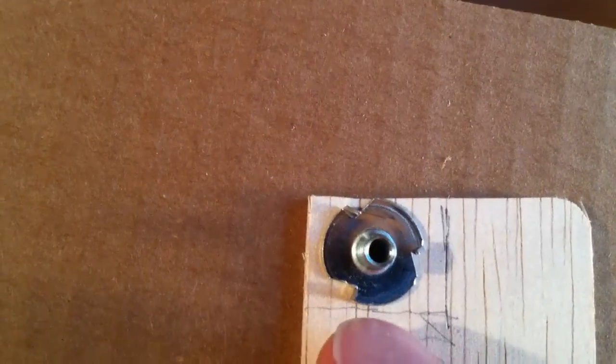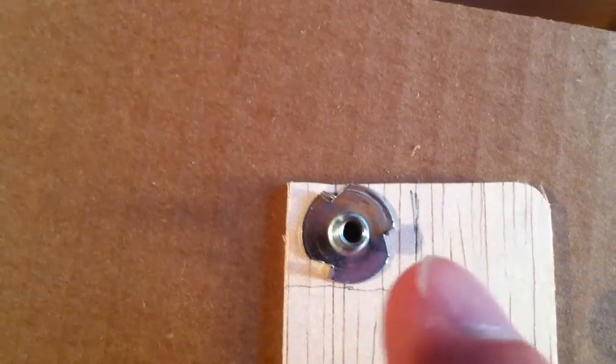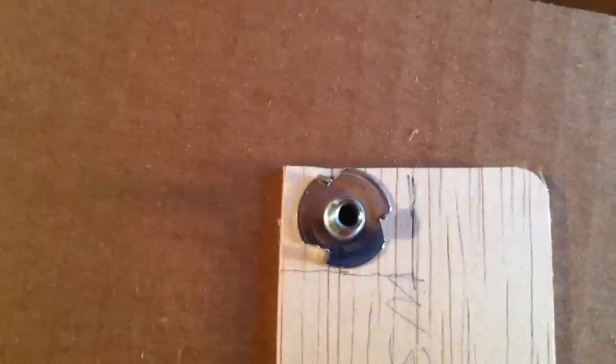So it's the same width as the blind nut but then a little longer so that there's a little bit more surface area. And I'll epoxy that to the bottom of this rail.